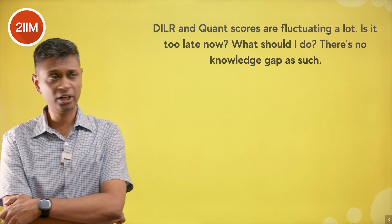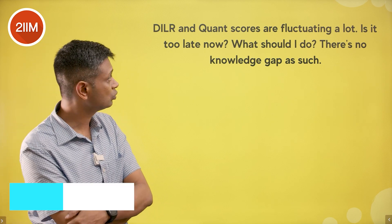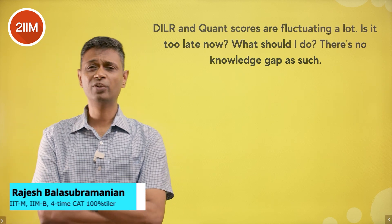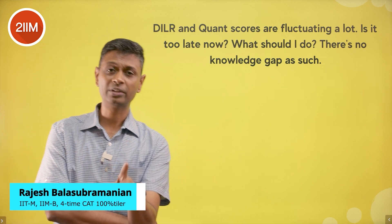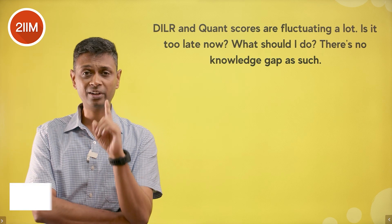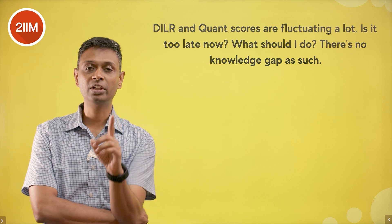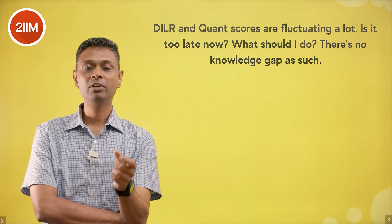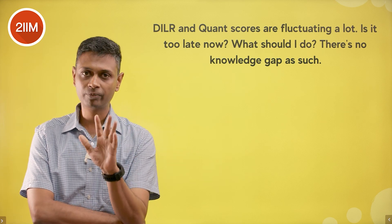DALR and quant scores are fluctuating a lot — is it too late now? First of all, it's not too late. It's still a month. If scores fluctuate, there is one reason and one reason only: you're being flippant about accuracy.